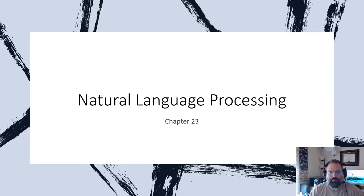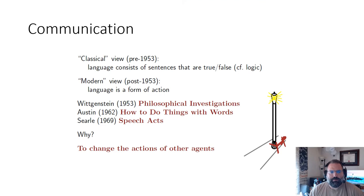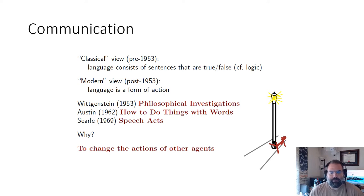Moving into chapter 23, which centers on natural language processing: when you talk about communication, there are two distinct lines that center around 1953. Before 1953, there was a classical view that basically viewed sentences as a series of true or false statements, centered on logic. After 1953, it moved into communication as a form of action — about communicating with the intent of some action, such as persuasion. Most of this is centered around the book Philosophical Investigations. Generally speaking, we talk in order to impact or change the behavior of others — be that a system, a process, or a person.